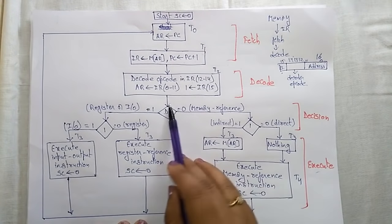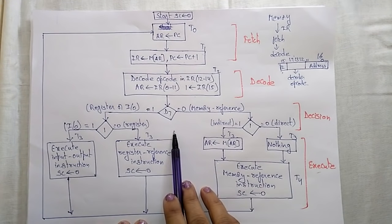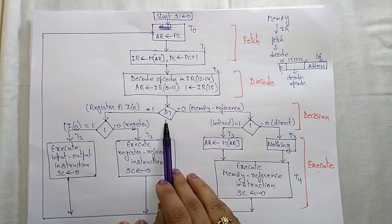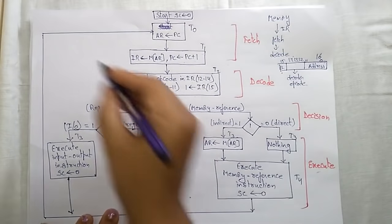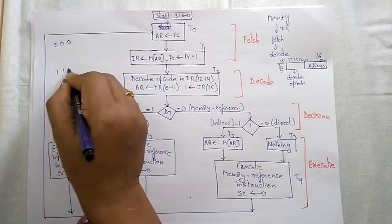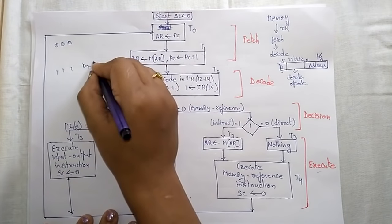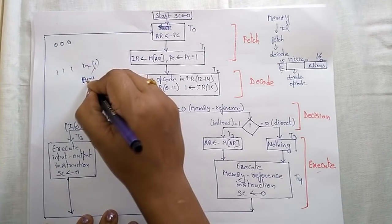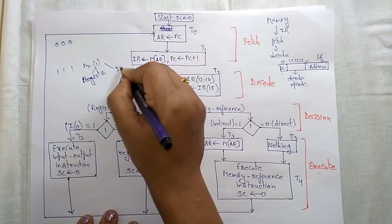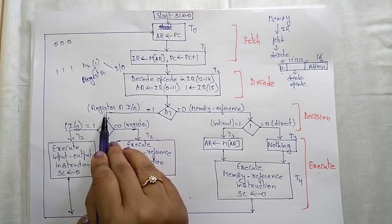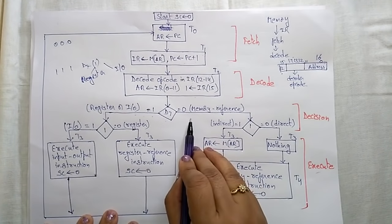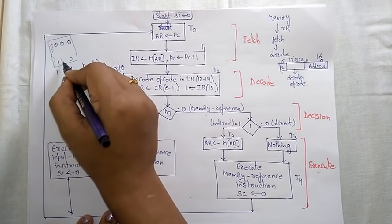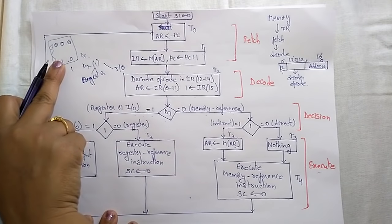After decoding, we have to execute the program. Before executing, we check whether the data is direct or indirect. The D7 bit — bits 14, 13, 12 form a 3-bit value from 0 to 111. D7 being 1 means it is a register reference or I/O reference instruction. If D7 is 0, it is compulsory a memory reference instruction. Values from 000 to 110 are allocated to memory reference, and the last value 111 is for register reference or I/O reference.